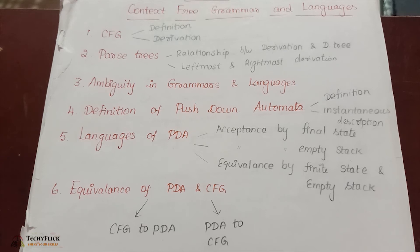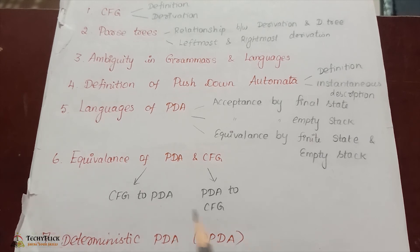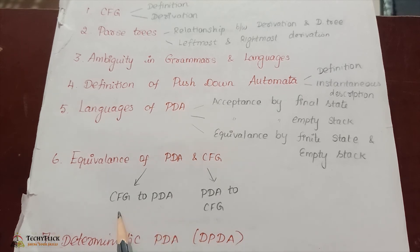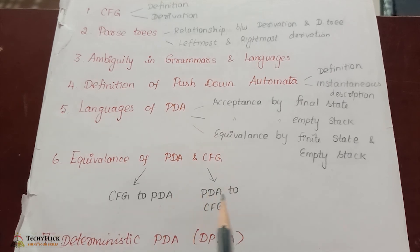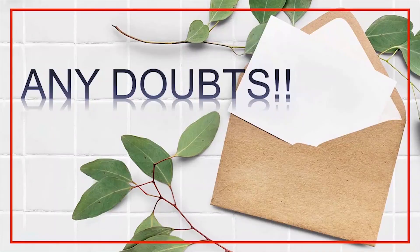Sixth topic: Equivalence of PDA and CFG — covering CFG to PDA Conversion and PDA to CFG Conversion. Here is our diagram showing the Automata diagram and how you convert between Grammars. Seventh topic: Equivalence and Conversion of PDA, and Deterministic PDA — that is DPDA. So these are the 7 topics of Unit 3.